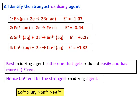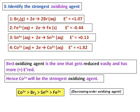If you put them in order of decreasing strength as oxidizing agent: Co³⁺ first, then Br₂, then Sn⁴⁺, then Fe²⁺.